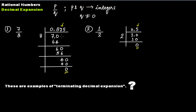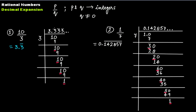These are two examples of terminating decimal expansions. But if we take the rational numbers 10 by 3 and 1 by 7, the situation is different. When you divide 10 by 3, every time you get the same remainder — one, one, one — so the quotient keeps repeating: 3.333... We write this as 3.3̄, placing a bar over the three to indicate that this digit keeps on repeating in the decimal.